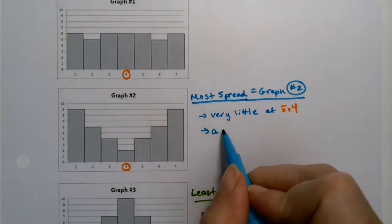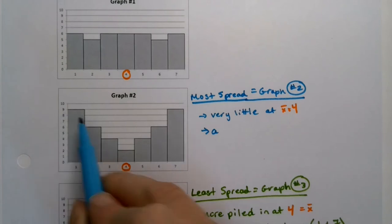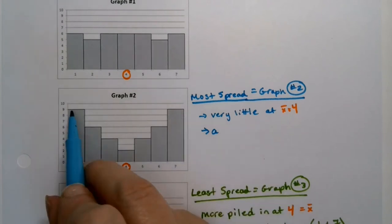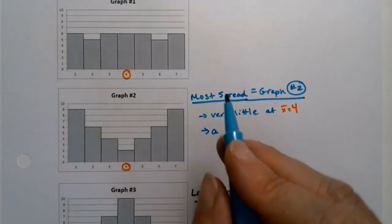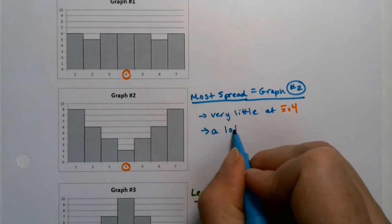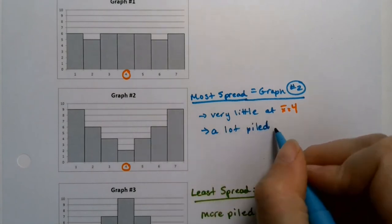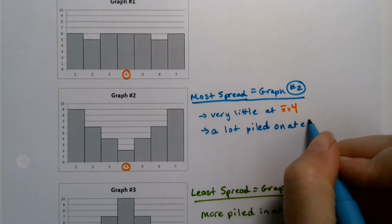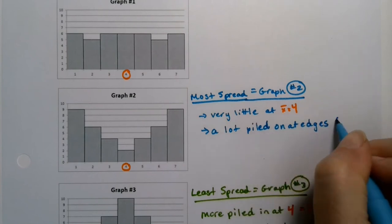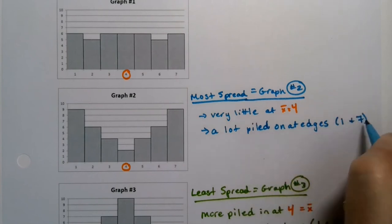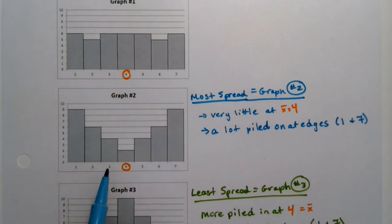I'll put X bar on those. And it has a lot, right? It has super high amounts piled on, right? Because those are frequencies of nine there, a lot piled on at the edges. And that, of course, is what standard deviation measures, is distance from the center.